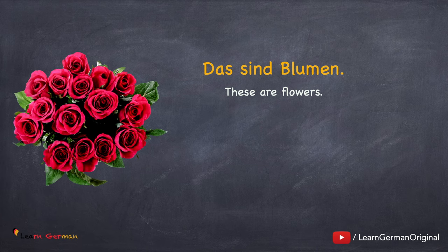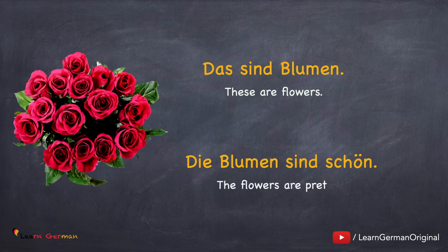Das sind Blumen. Die Blumen sind schön. Now since Blumen are in plural, you can't say eine or ein. Hence in the case of plural there is no unbestimmte Artikel. But when the article is negative and the plural has an article, this we will be learning in the next lesson.